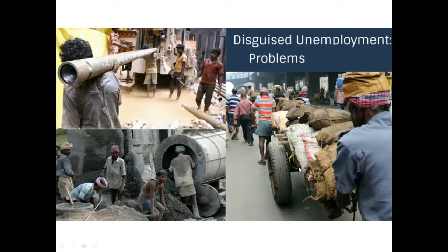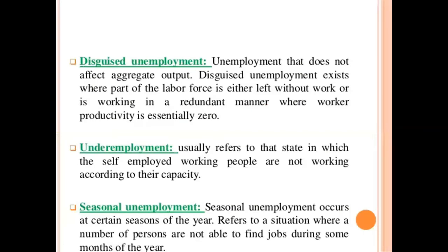When people are more employed than what is required and wages are also less, that is a situation of disguised unemployment. Disguised unemployment does not affect the output — that is, the production. It exists where part of the labor force is left without work or working in a redundant manner, below their capability, and their productivity becomes zero. In underemployment, people can be self-employed but are not working according to their capacity.